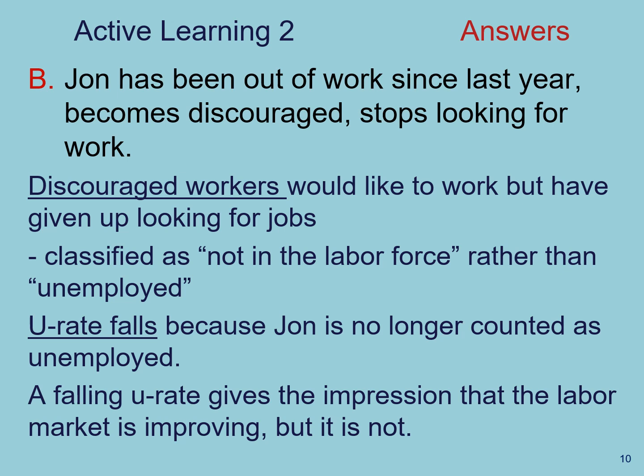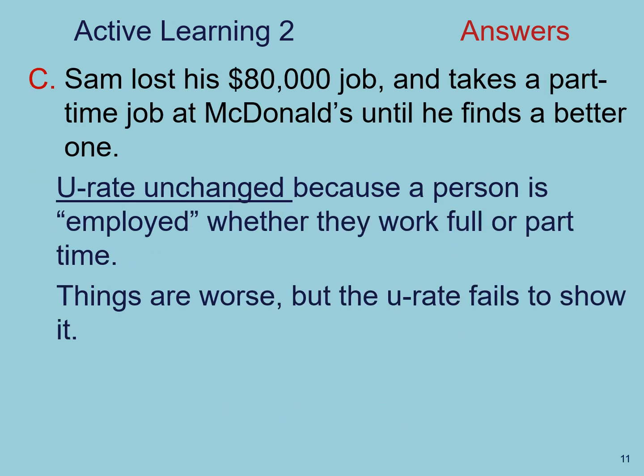There is a problem here because the official U3 measure of unemployment does not count discouraged workers. In scenario C, Sam lost his $80,000 job and takes a part-time job at McDonald's until he finds a better one. In this case, the unemployment rate does not change, because a person who is employed — whether full-time or part-time — still gets counted. Clearly, things are getting worse for Sam, but the unemployment rate fails to show this. This is another reason why the unemployment rate is not a perfect measure of conditions in the labor market.